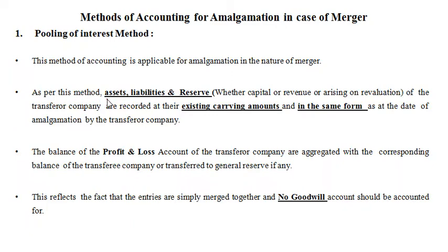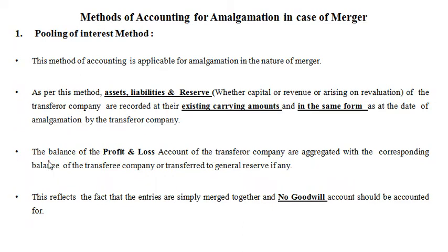As per this method, all assets, liabilities and reserves — whether capital or revenue, or arising on revaluation of the transferor company — are recorded at their existing carrying amounts and in the same form as at the date of amalgamation by the transferee company. The balance of the profit and loss account of the transferor company is aggregated with the corresponding balance of the transferee company or transferred to general reserve, if any.